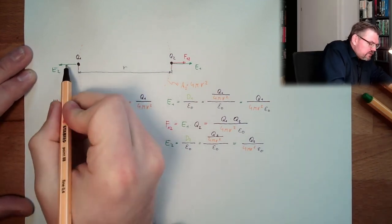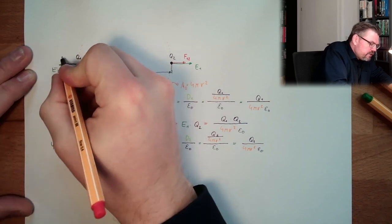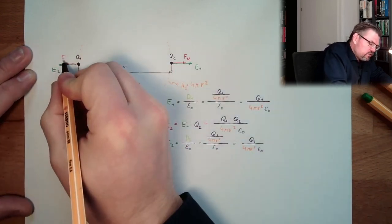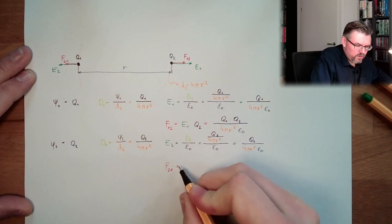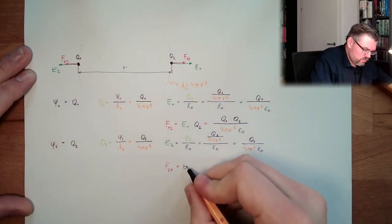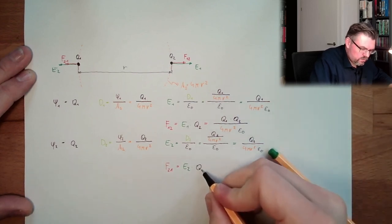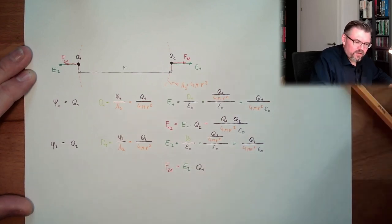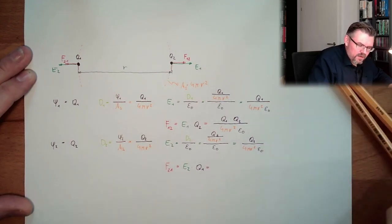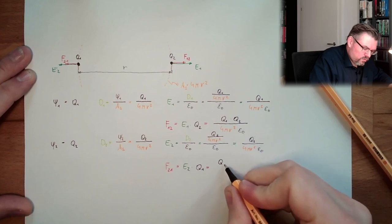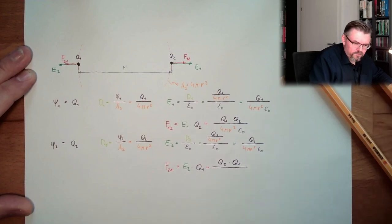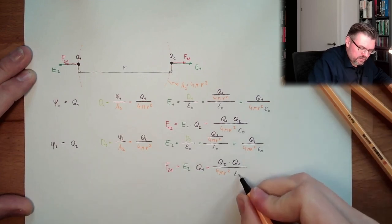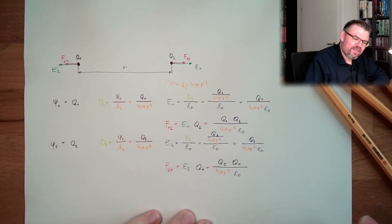Now we are calculating the force here. The force originated by charge 2 acting on charge 1. So this is the name. F21 equals. And now it's E2 multiplied by Q1. And look at that. The result is the same. It's Q2 multiplied by Q1. The order does not really matter. 4 pi r squared multiplied by epsilon 0. Those two are the same.